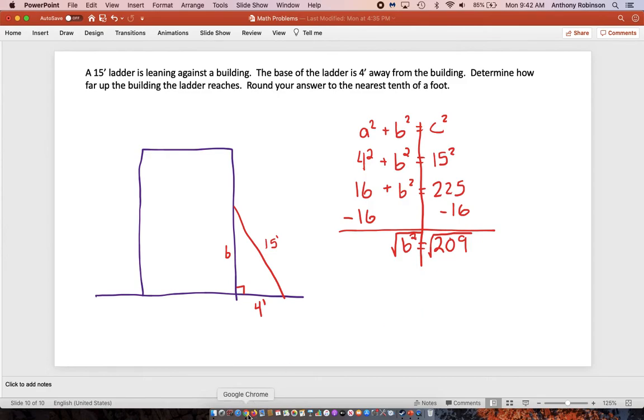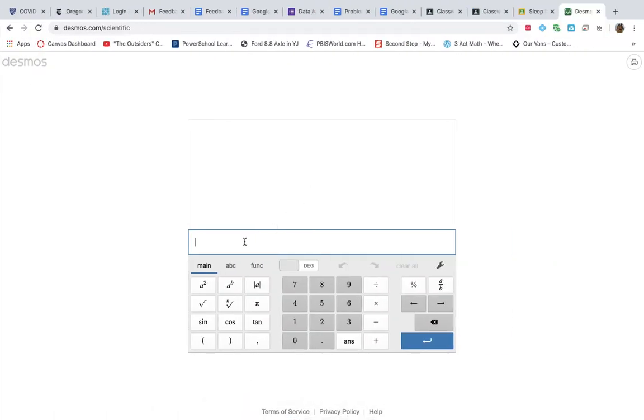So I'm going to switch to Desmos real quick, which I showed you guys last week. So switching to Desmos, so just enter in radical sign, 209. Okay, so that is 14.45. So if I'm rounding it to the nearest tenth, that would be 14.5. So I'm going to go ahead and take that and put it back into my display.